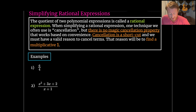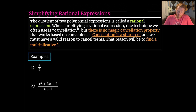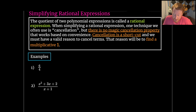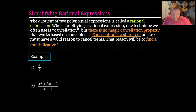So, simplifying rational expressions. The quotient of two polynomial expressions is called a rational expression. We could use less fancy language and just call it a fraction, but we will continue to use this more mature language of rational expressions. When simplifying a rational expression, one technique we often use is cancellation.